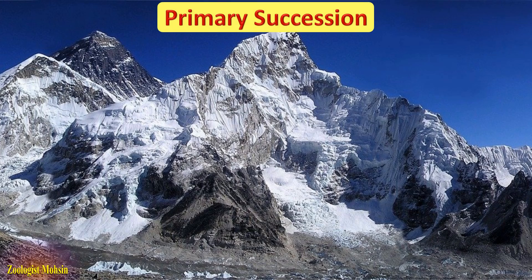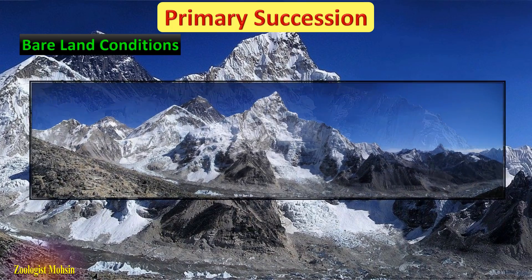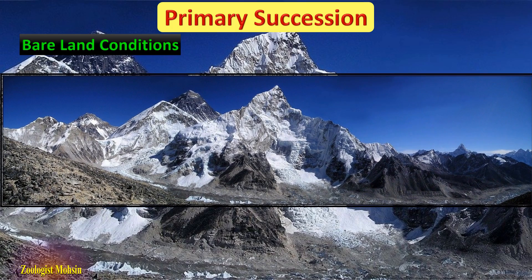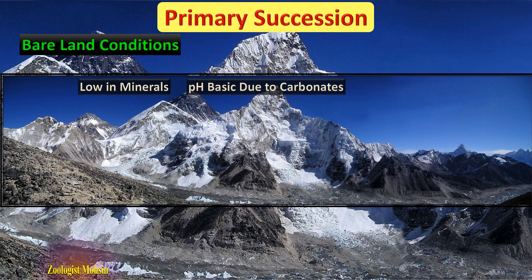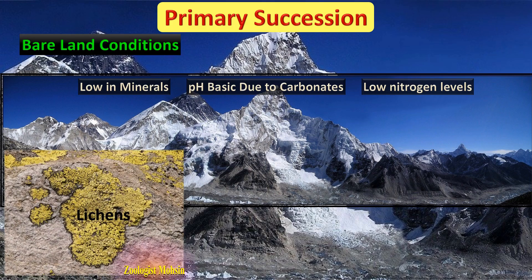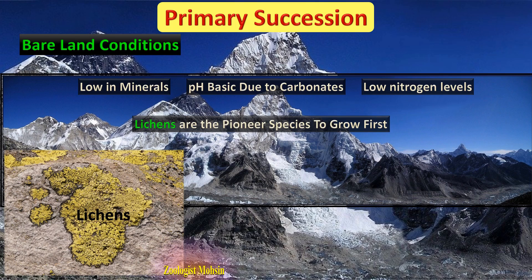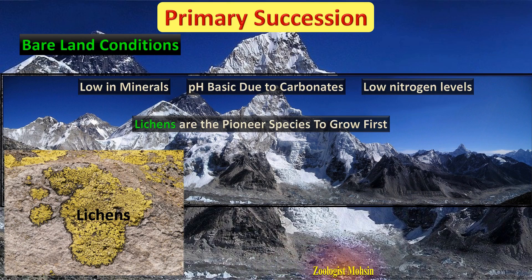Primary succession. Newly exposed bare lands are low in minerals required by higher plants, have a basic pH, and have a very low percentage of nitrogen. In such deficient and harsh conditions, the first pioneers to invade and grow on this bare land are lichens. Lichens are the pioneer species to grow first in newly exposed lands.